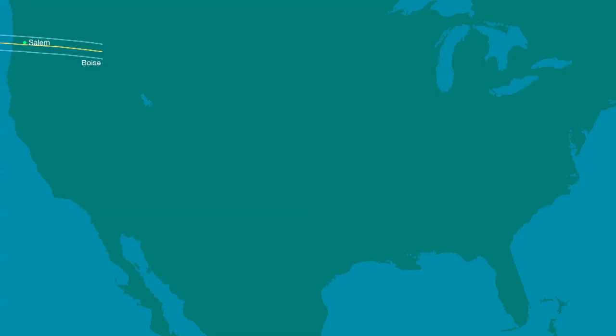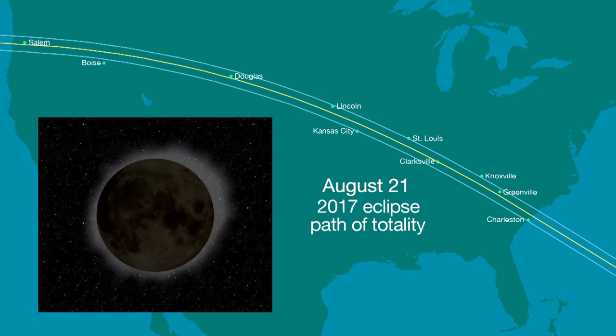If you are lucky enough to see the 2017 solar eclipse, your pictures will show a globular corona. Do not be disappointed. In terms of brightness distribution, you have truth on your side.